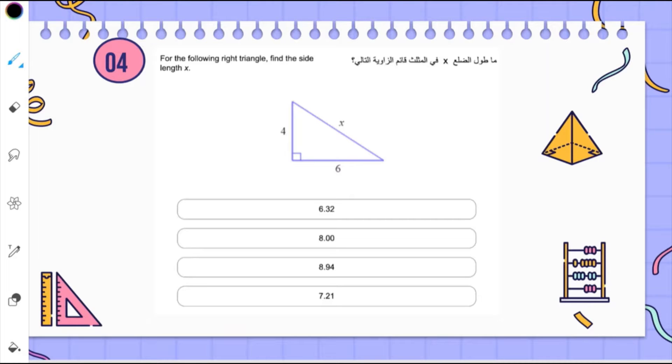For the following right triangle, find the side length x. So we're going to use the Pythagoras theorem to answer this question.